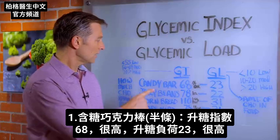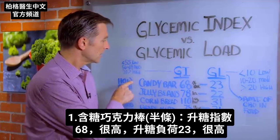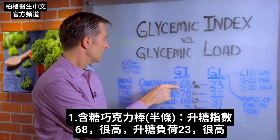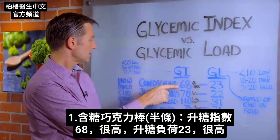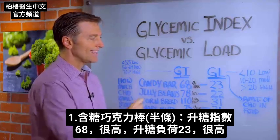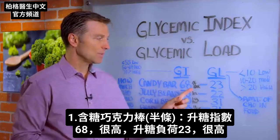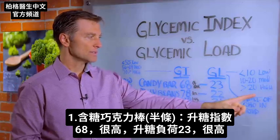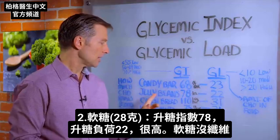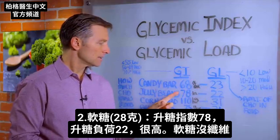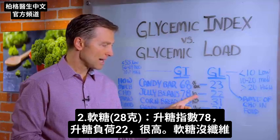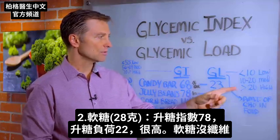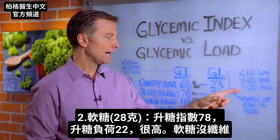Let's go through some other examples. A typical candy bar is 68 on the glycemic index — that's borderline and pretty high, and that's for just half a candy bar. The glycemic load is 23, so it's still high. Jelly beans are 78 for a one-ounce amount, and the glycemic load is 22 — again, high. There's not a lot of fiber in jelly beans.